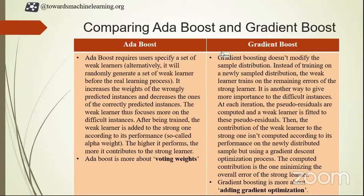In AdaBoost, what we have done is we update the weight of the previously misclassified samples — we increase the weight of that sample and then pass it to the next weak learner. In Gradient Boost, what we did is we compute the residuals and we try to fit our features and those residuals in a decision tree, then compute the second residuals and so on. In the end, we add all the outputs of these trees together.